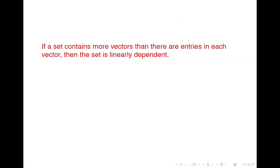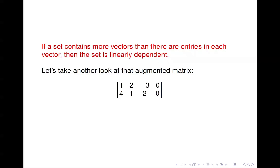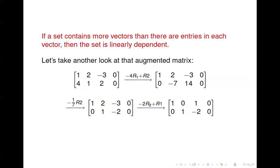Here's a rule: if the set contains more vectors than there are entries in each vector, then the set is linearly dependent. That's the case we just looked at — we had three vectors in R2, so more vectors than entries in each vector. If we look at that augmented matrix and do some row operations, we get the matrix in reduced echelon form.